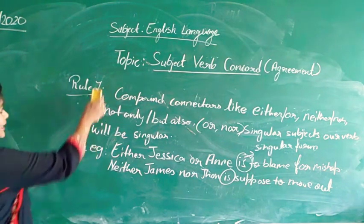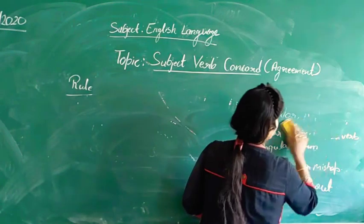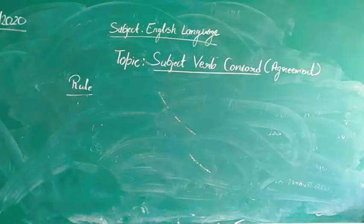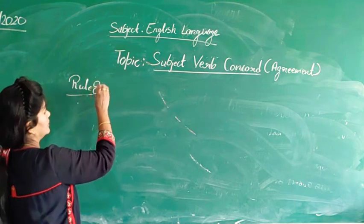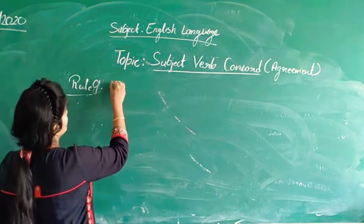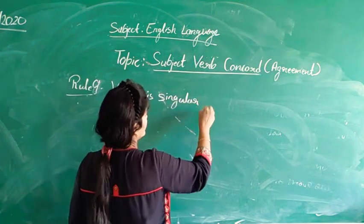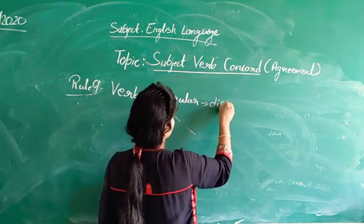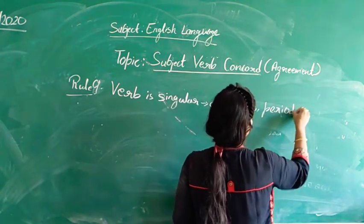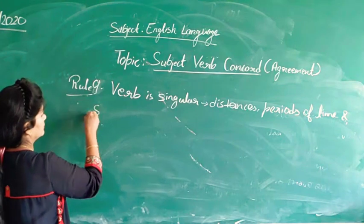Now let's discuss rule number 9. Rule number 9 says the verb is singular when we are referring to distances, periods of time, and sums of money as the subject of the sentence.